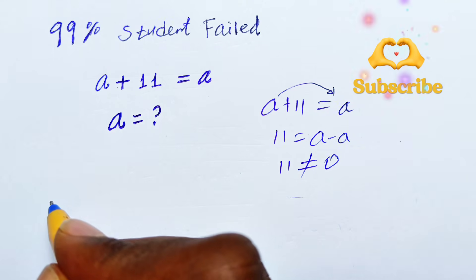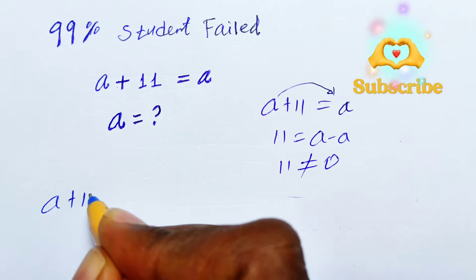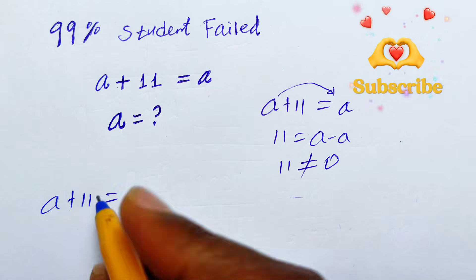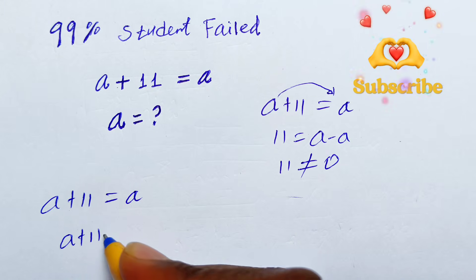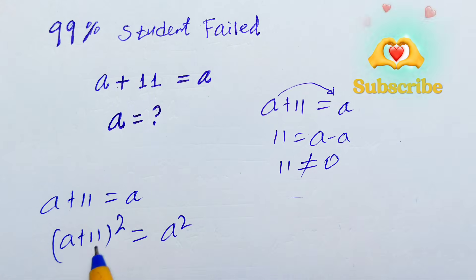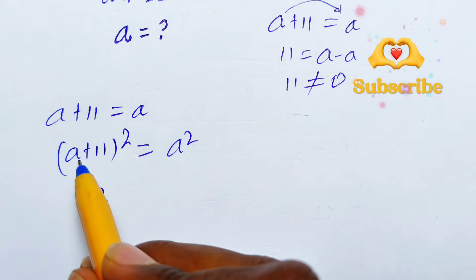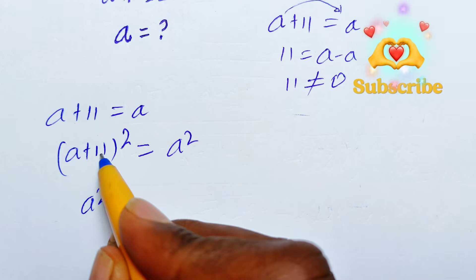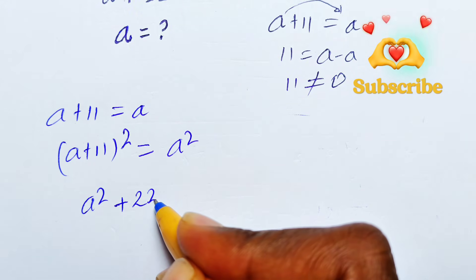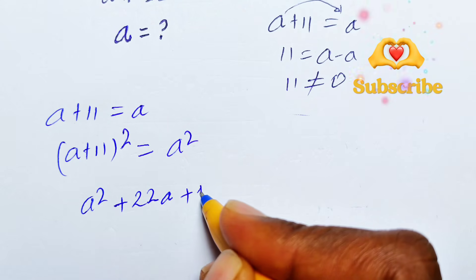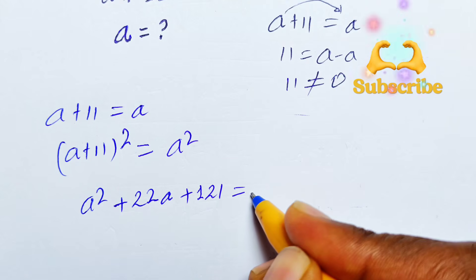So √(a + 11) = √a. Squaring both sides of this equation gives (a + 11)² = a². Expanding the left side: a² + 2(11)(a) + 11² = a², which gives a² + 22a + 121 = a².